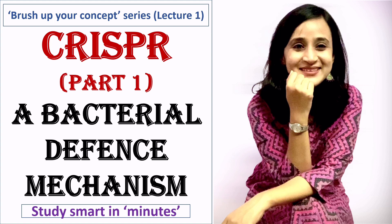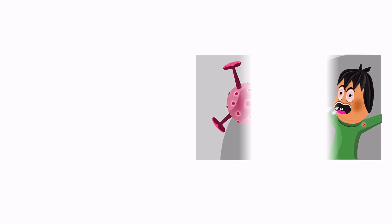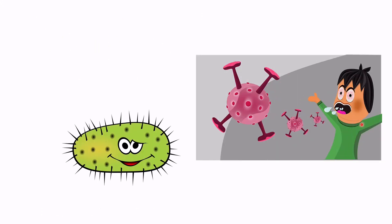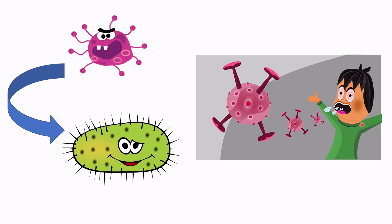Just like us, bacterial cells can also be attacked by viruses. If a virus infects a bacterial cell, the CRISPR immune system protects bacteria by destroying the viral genome. Hence, we can say that CRISPR is the defense mechanism of bacteria against viruses.